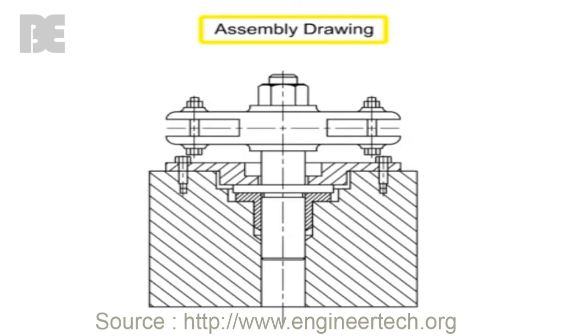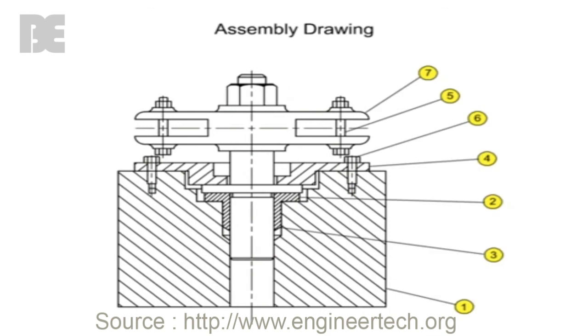Assembly drawings use section views to show interior subcomponents that may not be otherwise seen from conventional views. Balloon numbers are used to help identify each component for the parts list. To avoid confusion, fasteners and shafts are typically left out of assembly section views, even if the cutting plane would normally reveal them.